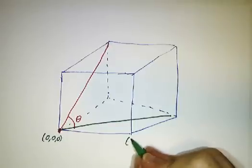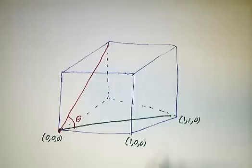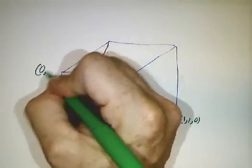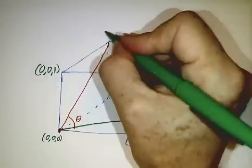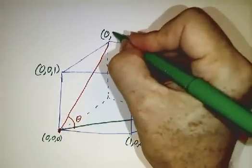And this will be the point 1, 0, 0. And this will be 1, 1, 0. Because we're going to take the x-axis in this direction, the y-axis in this direction, and the z-axis is up. So this is the point 0, 0, 1. And this is the point 0, 1, 1.